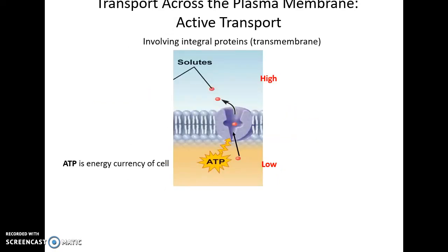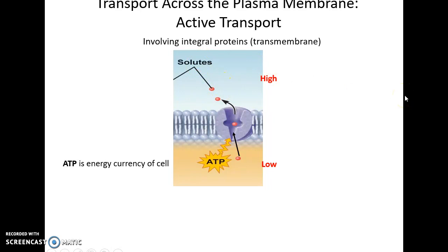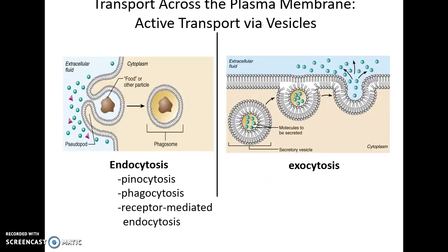Transmembrane proteins can use energy from ATP to move a substance from low concentration inside the cell to high concentration outside, or the reverse — a great way to get rid of waste products. Transport can also occur as bulk transport using vesicles.